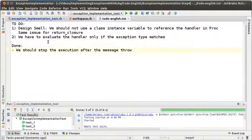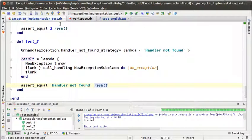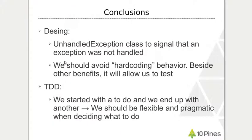We are done for this episode. What we did is we created the UnhandledException class to signal that an exception was not handled, and we avoid hard coding what to do when an exception is not handled. Besides other benefits, that is the possibility to configure what to do — it also allows us to test exactly that the exception is not being handled. From the TDD point of view, we started with one to-do and ended up doing another, and that's okay — that is something that happens all the time. We should be flexible and pragmatic enough to change course and do what we need to solve a problem. I hope you liked this fourth episode and I hope to see you in the next one.